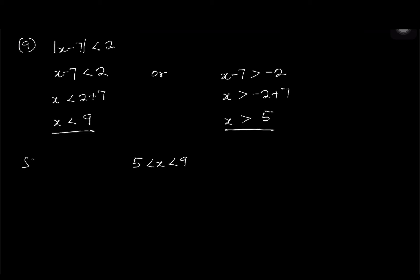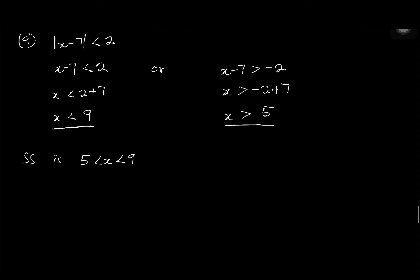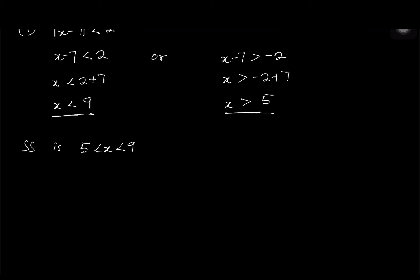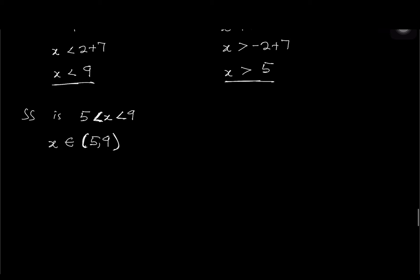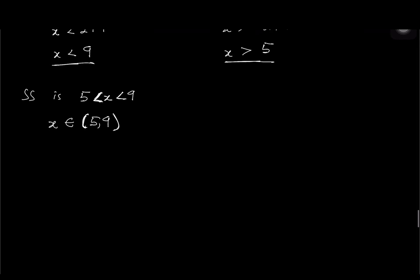The solution set for question 9 is 5 less than x less than 9. In interval notation: x belonging to (5, 9) using parentheses because there's no equal-to sign. For a non-strict inequality you'd use brackets. On the number line, mark 5 and 9 with open circles and connect with a line.